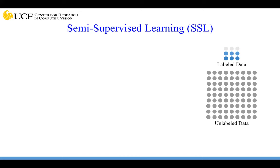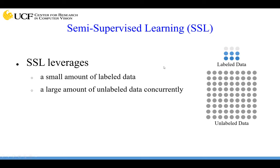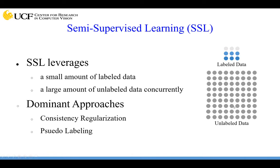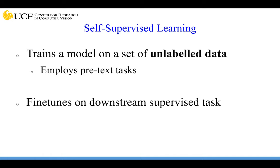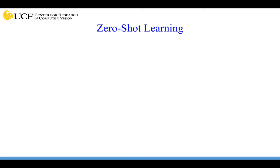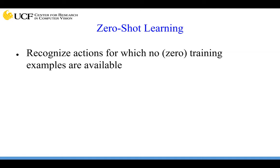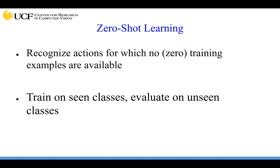The approaches are semi-supervised learning, few-shot learning, self-supervised learning, and zero-shot learning. In semi-supervised learning, the idea is to leverage small labeled data together with large unlabeled data. In self-supervised learning, we train a model on unlabeled data by applying pretext tasks, and once features are learned, we fine-tune on a downstream supervised task. In zero-shot learning, we want to recognize actions for which there are no training examples available — we train on seen classes and evaluate on unseen classes.